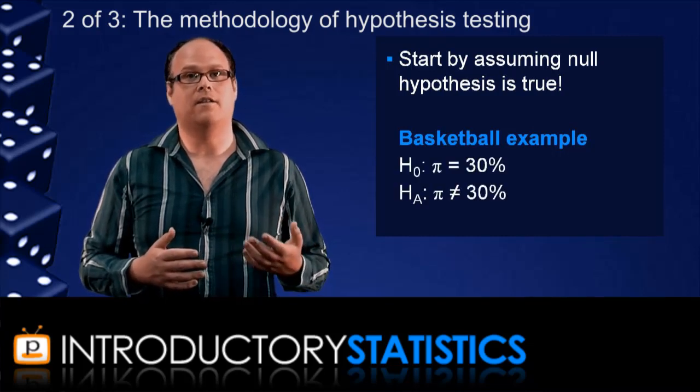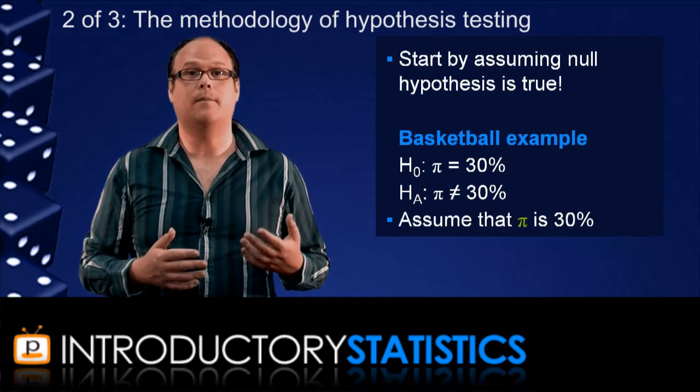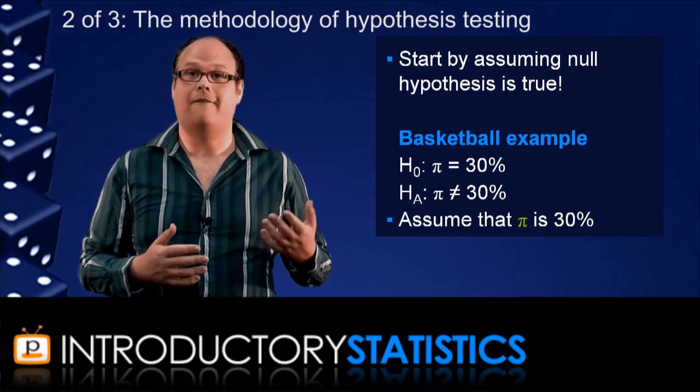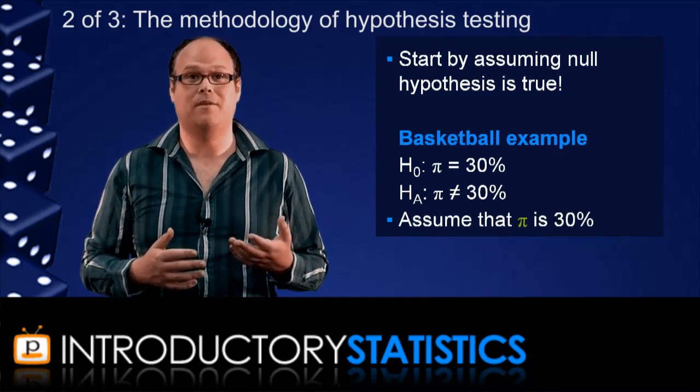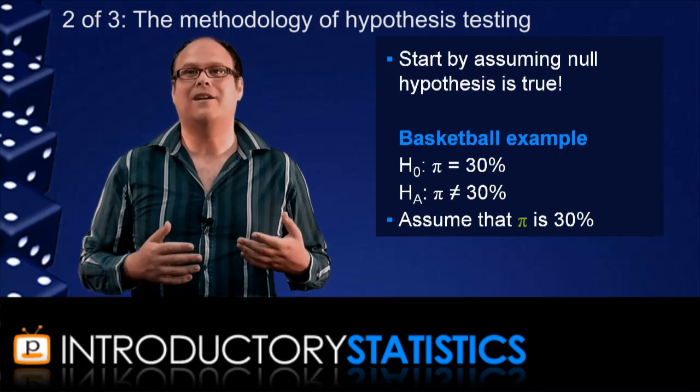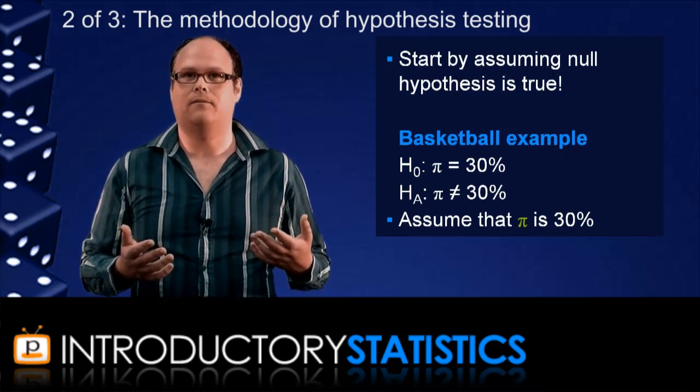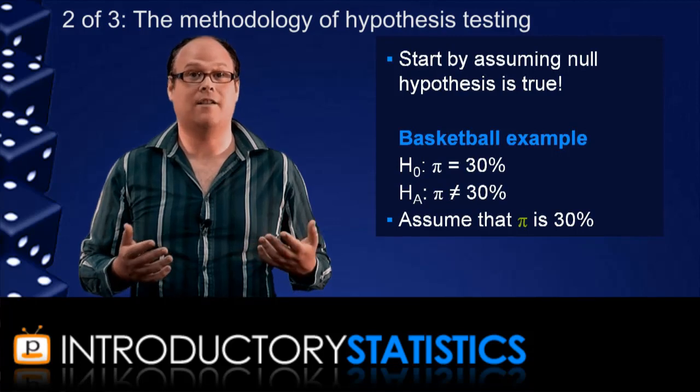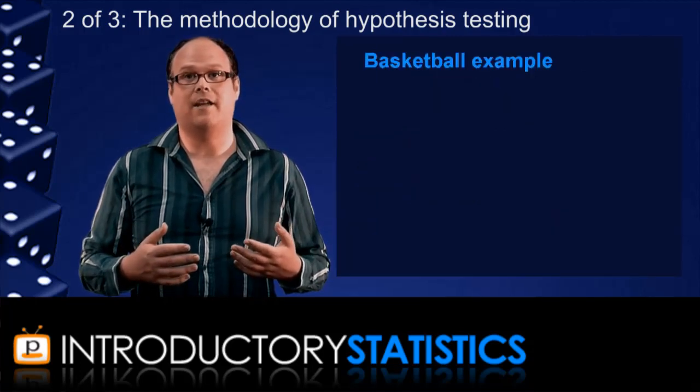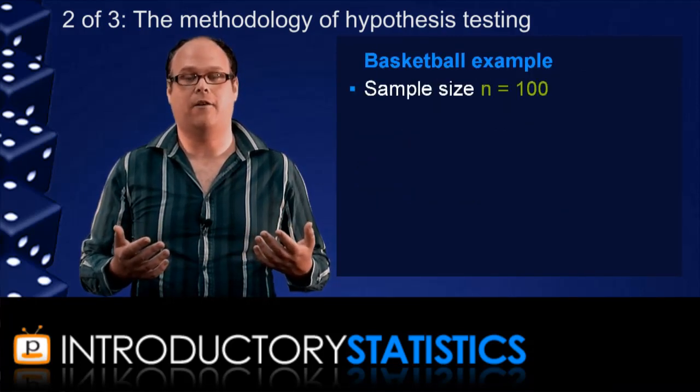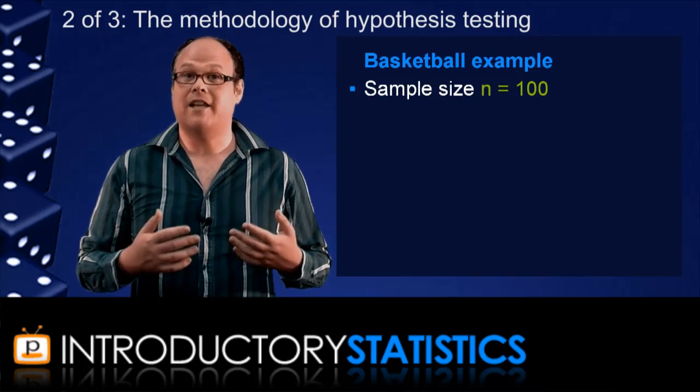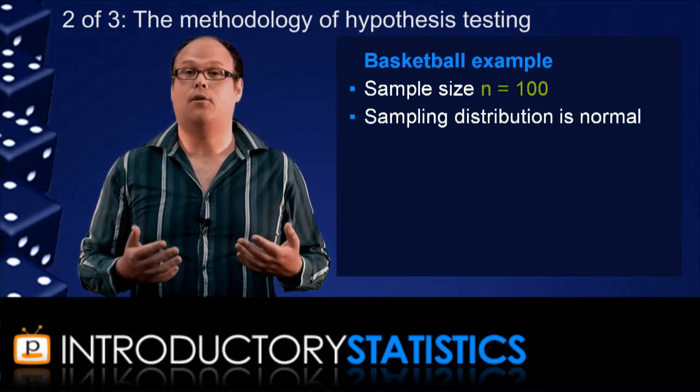So we assume that the null hypothesis is true. That is, we assume that the proportion, pi, of fans that are female is 30%. And this tells us what to expect when we collect a sample. And sampling distributions allow us to be fairly precise about this. For example, let's say a sample of 100 basketball fans is going to be studied.